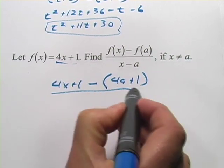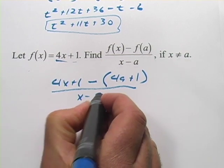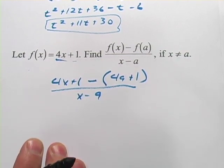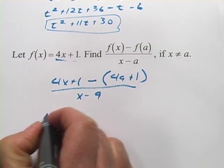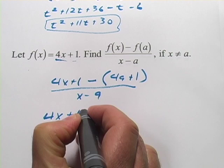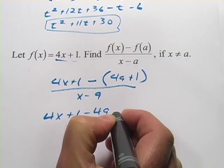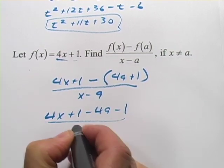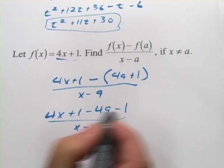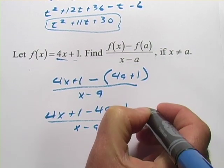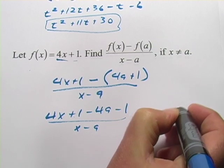And then, on the bottom, we have x minus a. Now, there's definitely some simplifying we can do here. Let's go ahead and put the minus sign distributed through here. So, on top, we get 4x plus 1 minus 4a and then minus 1. So, that would come out to the positive 1 and negative 1 add up to 0. We would get 4x minus 4a.